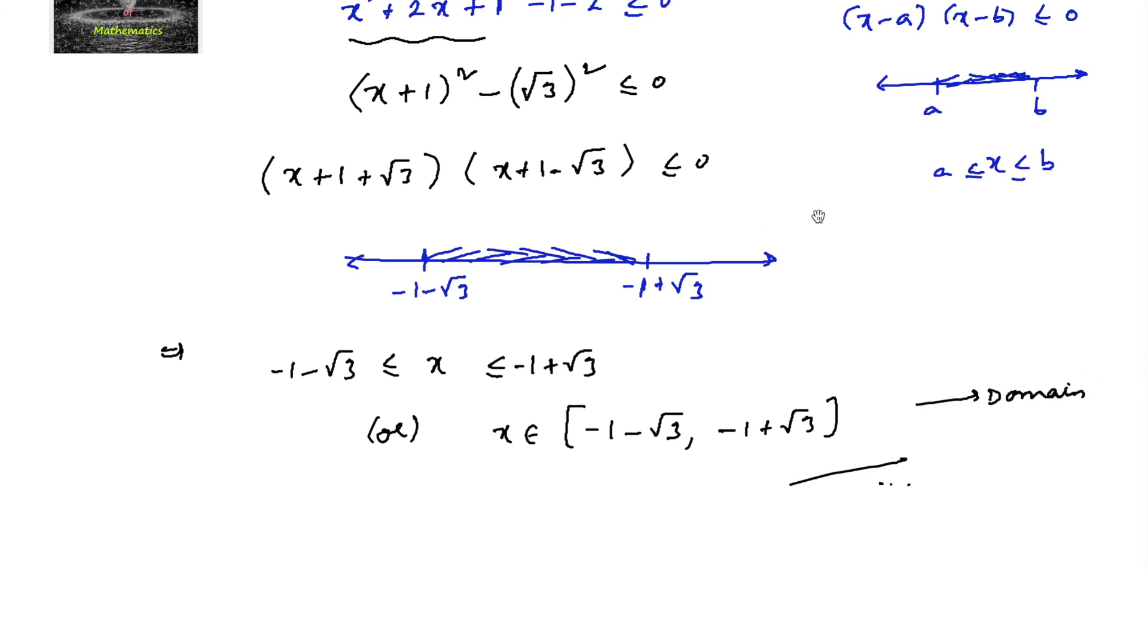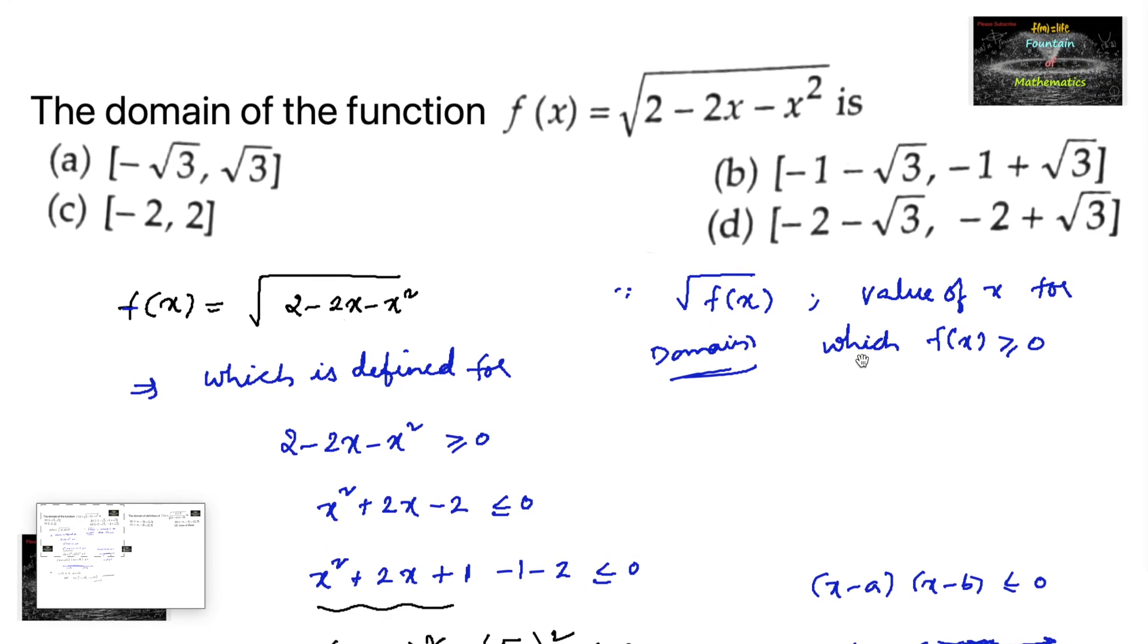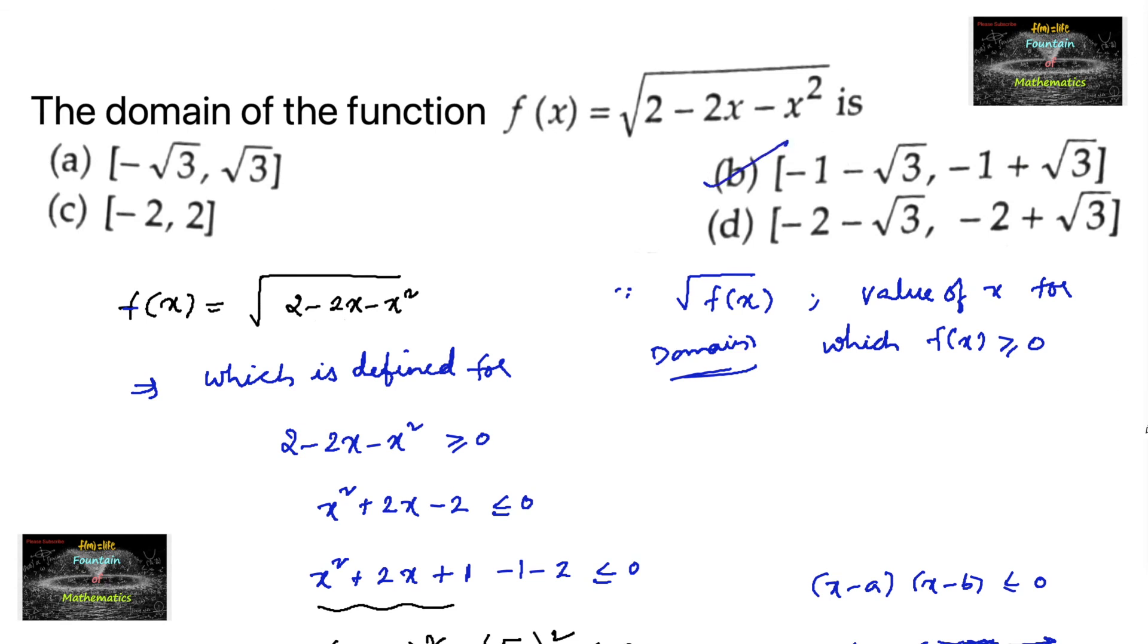Let us check the options. Minus 1 minus root 3, minus 1 plus root 3. So it is in option b. So you can go with option b. Thank you.